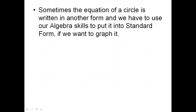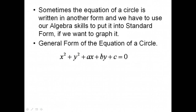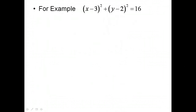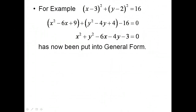Sometimes the equation of a circle is written in another form, and we have to use algebra to convert it to standard form. The general form is x squared plus y squared plus ax plus by plus c equals 0. This form is found by expanding the standard form, combining terms, and reordering. For example, squaring each binomial and combining gives x squared plus y squared minus 6x minus 4y minus 3 equals 0.